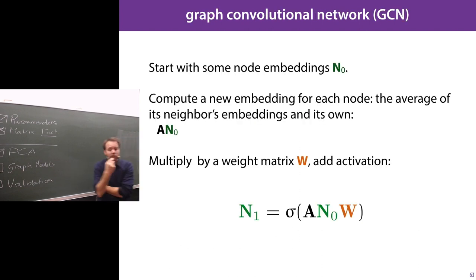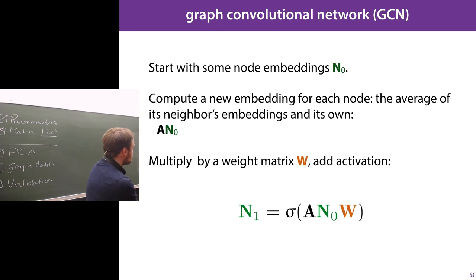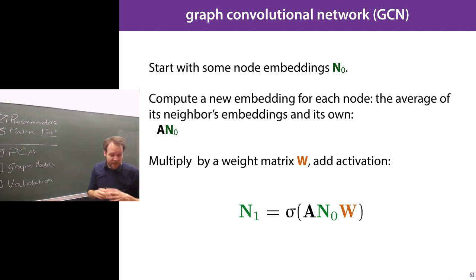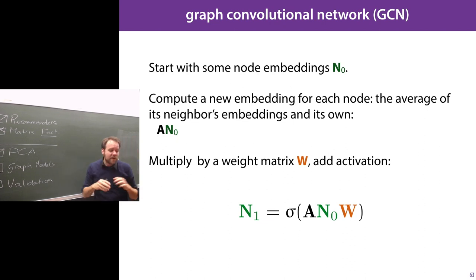Now we want to add some weights to control this mixing. We start with trainable node embeddings N0. We compute new embeddings for each node as the average of its neighbors' embeddings and its own, by multiplying by this normalized adjacency matrix A — where A is the normalized adjacency matrix with the diagonal added. The result we multiply by a weight matrix, which projects into a different space, possibly reducing dimension. Then we add a sigmoid activation to scale everything to between 0 and 1, giving our new embeddings. That's your basic graph convolution — one layer in your neural network.